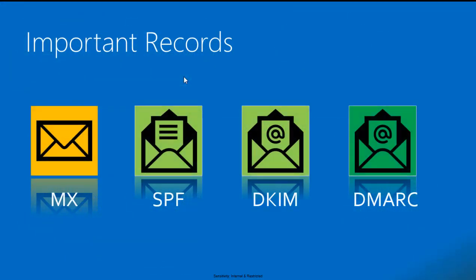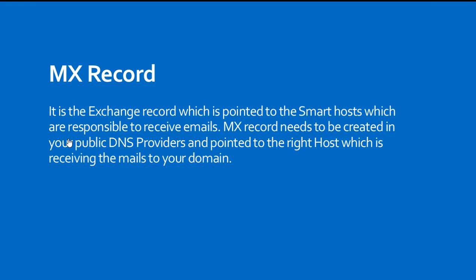Let's talk about three important records which play a major role in mail flow routing, spam filtering, and phishing attack prevention. The MX record is an important record for the exchange domain — this is where your mail will be delivered first when mail is sent from the outside world to your domain, so ensure you have created and pointed it to the right servers to receive mails.